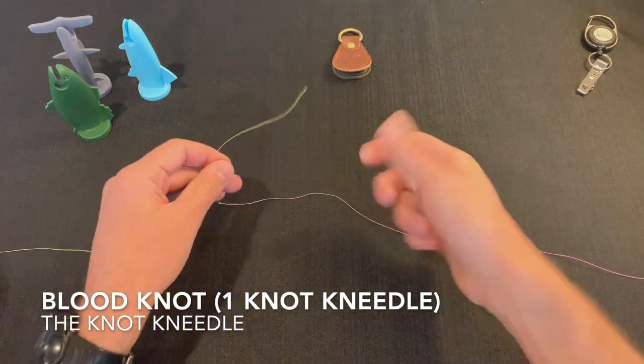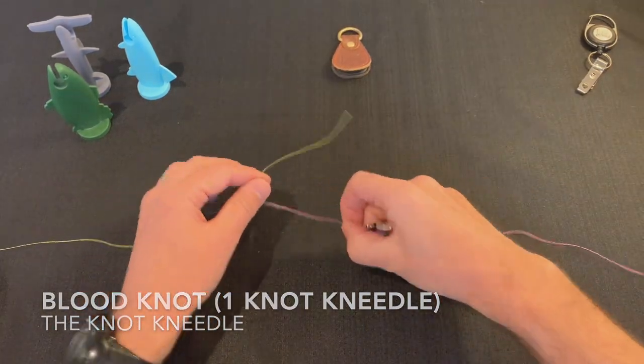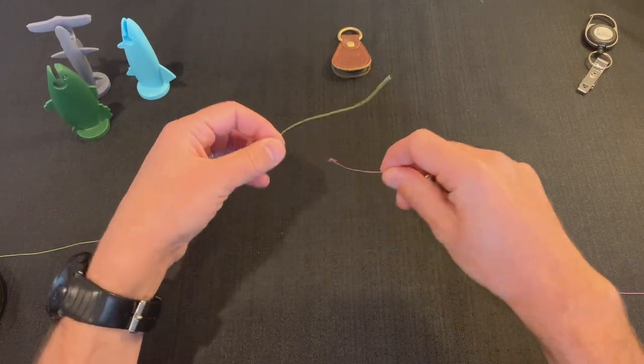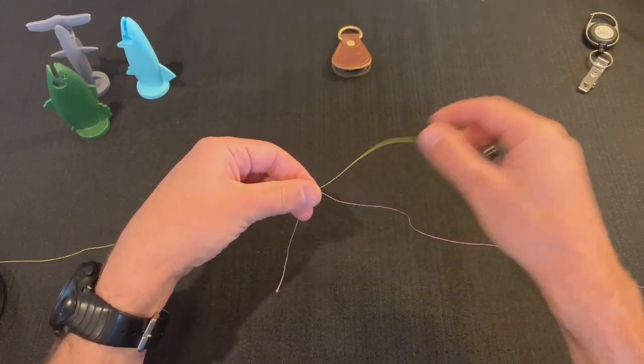I'm going to show you how to tie a blood knot using the knot needle. The yellow line is my leader with the pink line being my tippet.